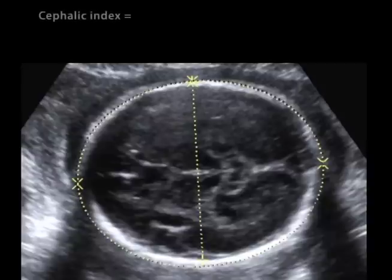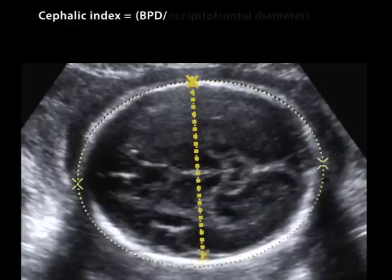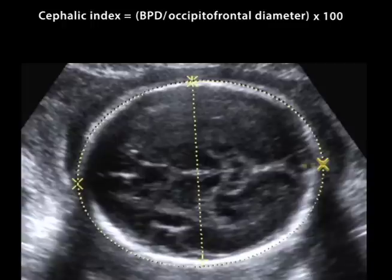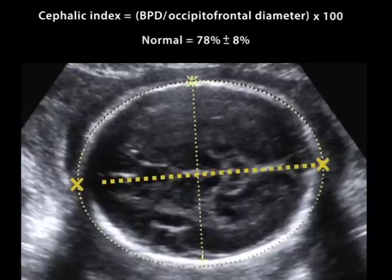The cephalic index is the biparietal diameter divided by the occipitofrontal diameter times 100. The occipitofrontal diameter is measured from the occiput to the frontal bone. A normal cephalic index is 78% plus or minus 8%.